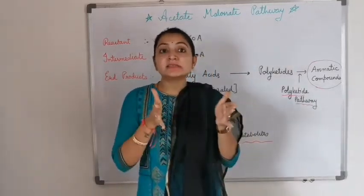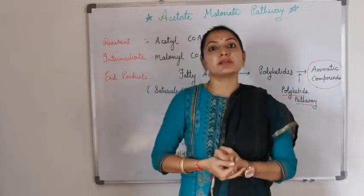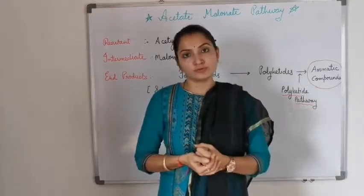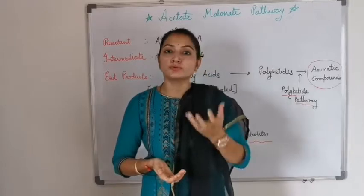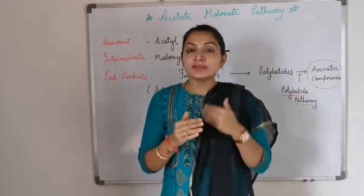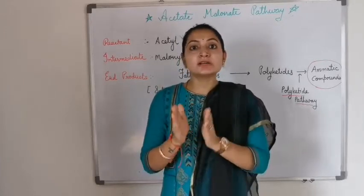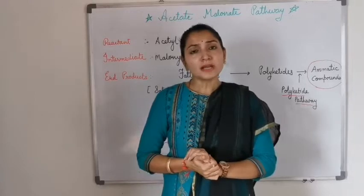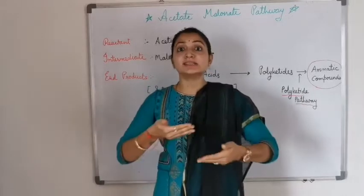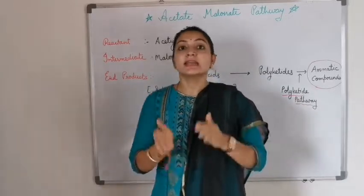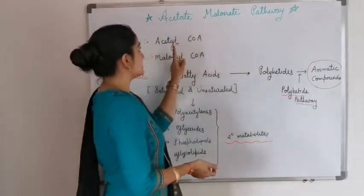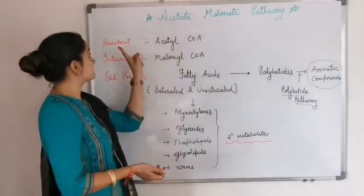The acetate-malonate pathway is part of the acetate pathway. Plants produce glucose through photosynthesis in the presence of carbon dioxide and water. This glucose undergoes glycolysis, and during glycolysis, plants produce acetyl coenzyme A as an intermediate. This acetyl coenzyme A is used as a starting material in the acetate-malonate pathway.